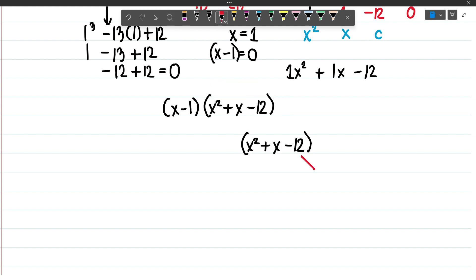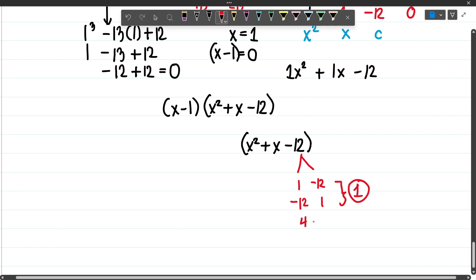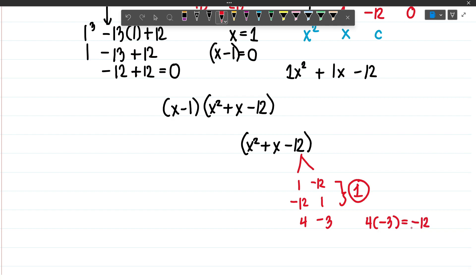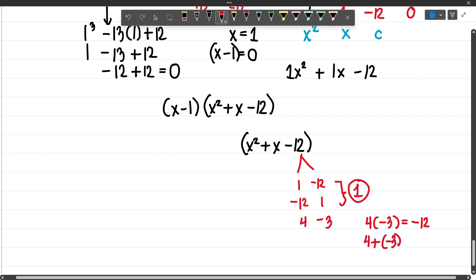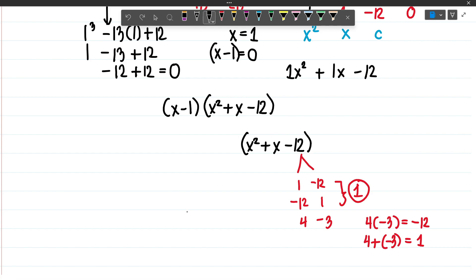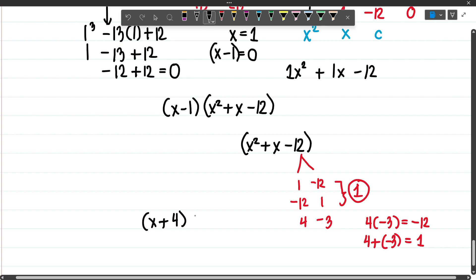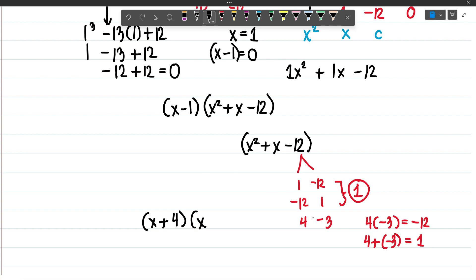What are the factors of negative 12 that add up to the middle term 1? We can try 1 and negative 12, negative 12 and 1, but none of these values would add up to 1, which is what we need because the coefficient of our middle term is 1. So let's try 4 and negative 3. We can factor this out by pairing these values to our x. The factors of this equation would be x plus 4 and x minus 3.